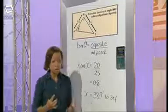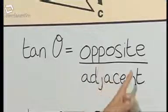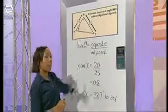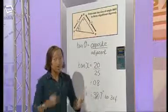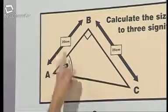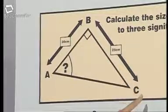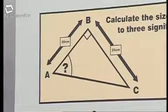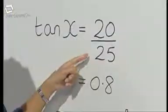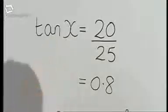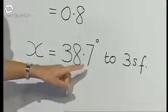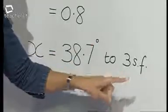I use the same ratio as Jamie: tan theta equals opposite over adjacent. And I also called the unknown angle X. But I got different values for my opposite and adjacent. This side here, AB, is the opposite and that's 20. And this side here, BC, is the adjacent, which is 25. So tan X equals 20 divided by 25. To find the angle X, I use the inverse tan function, which gave me an answer of 38.7 degrees to three significant figures.